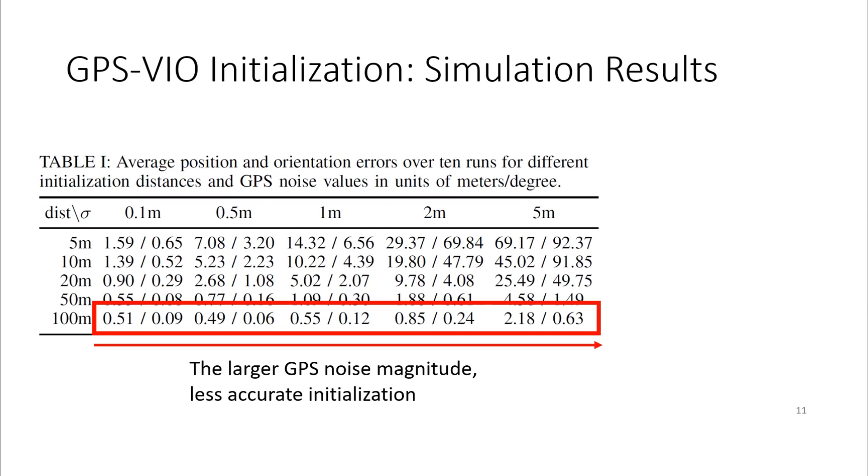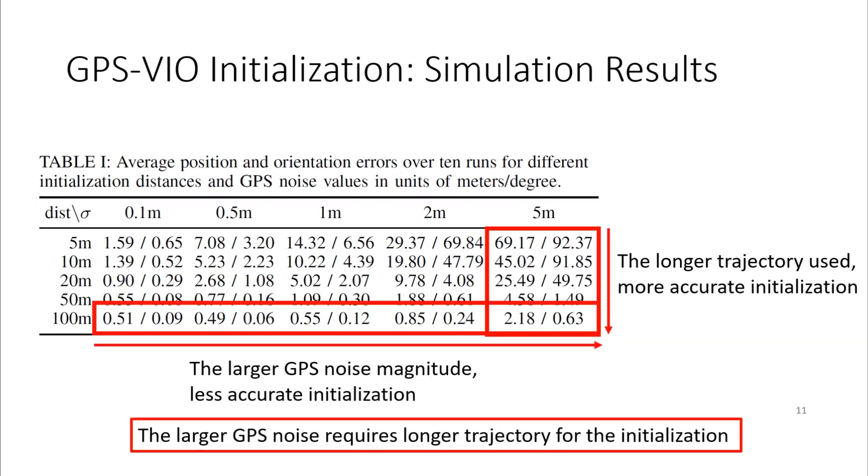On the other hand, for the same GPS noise magnitude, if we have a longer trajectory, we can get better initialization quality. Therefore, this concludes that we can achieve robust initialization by having longer trajectory for the initialization procedure.